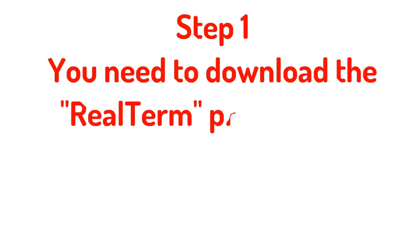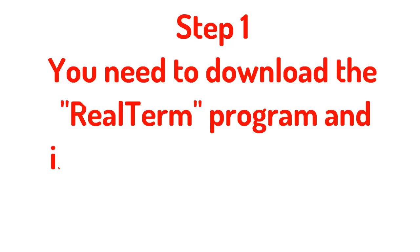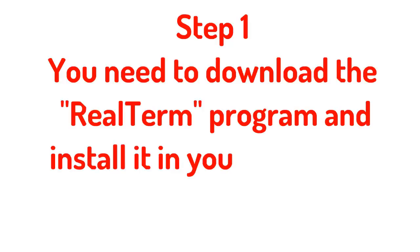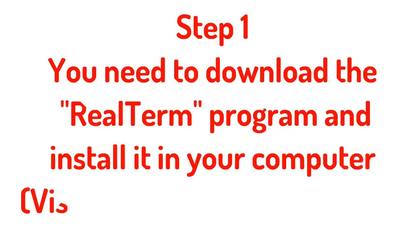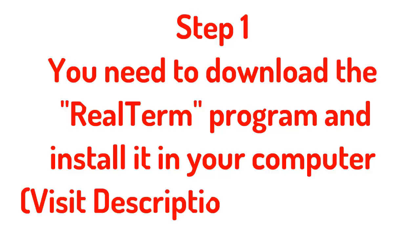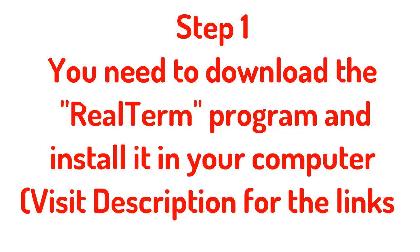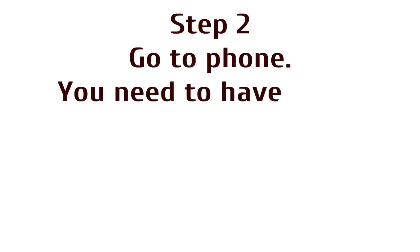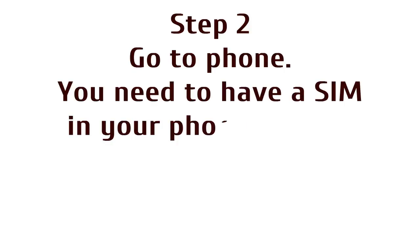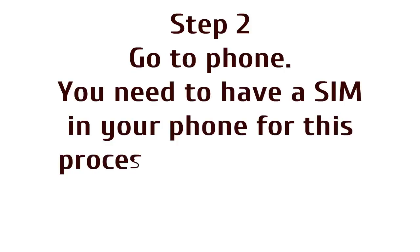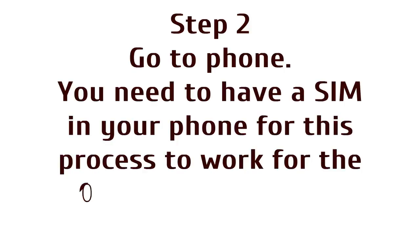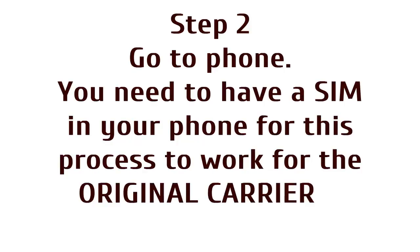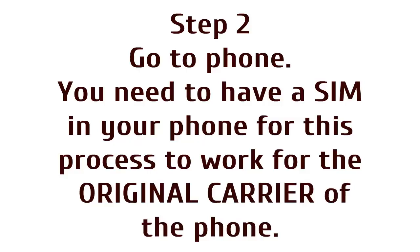Step 1. You need to download the RealTerm program and install it on your computer. Visit the description for the link. Step 2. Go to your phone. You need to have a SIM in your phone for this process to work for the original carrier of the phone.